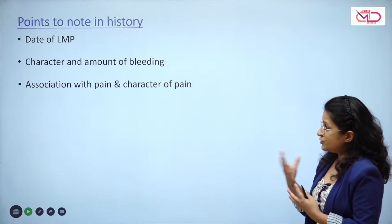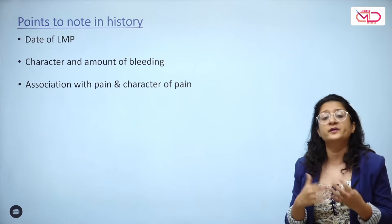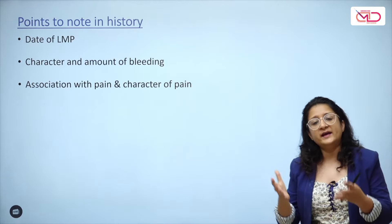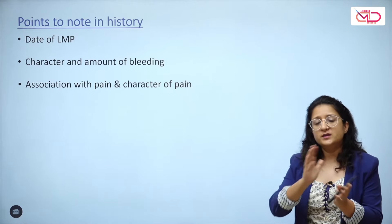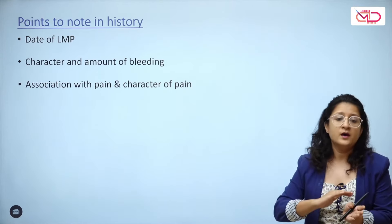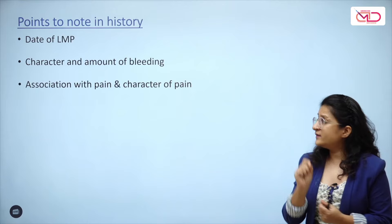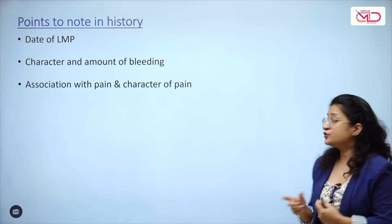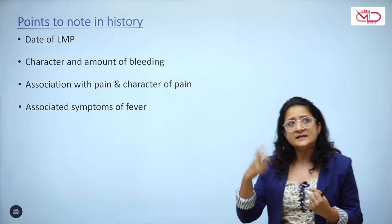Note the association with pain and its character. In a pregnant woman, pain must be localized to the lower abdomen. Particularly in ectopic pregnancy, pain is likely localized to one side — the iliac fossa, left or right, depending on which tube is involved. Note the site and location of pain. Also ask about associated symptoms like fever, since in miscarriage or abortion you want to know if infection is already present.